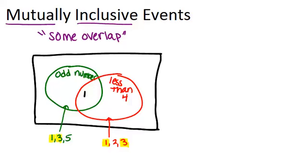If we were to fill in the actual numbers, 1 and 3 would go here, 5 would be an odd number that's not less than 4, and 2 would be a number less than 4 that's not odd.